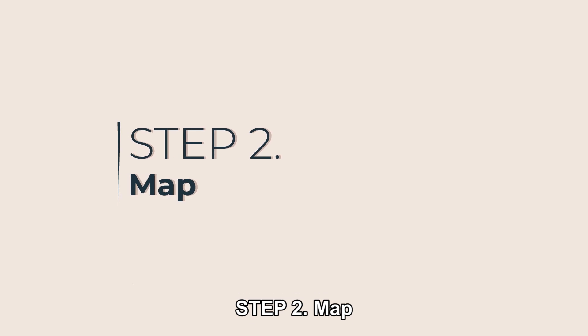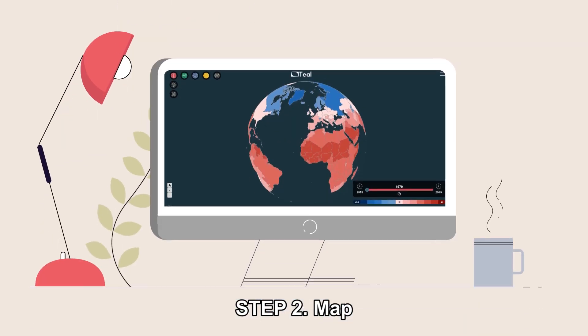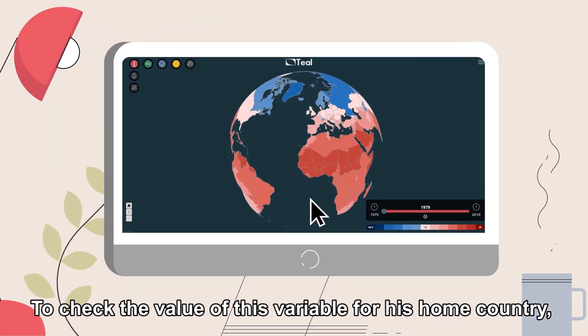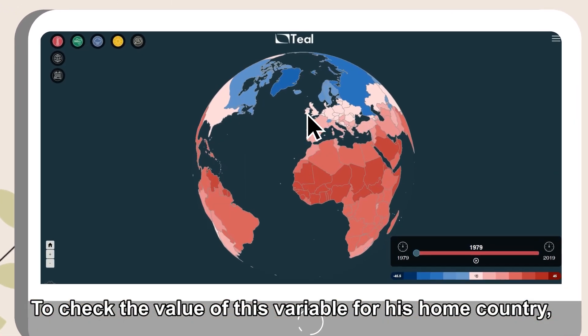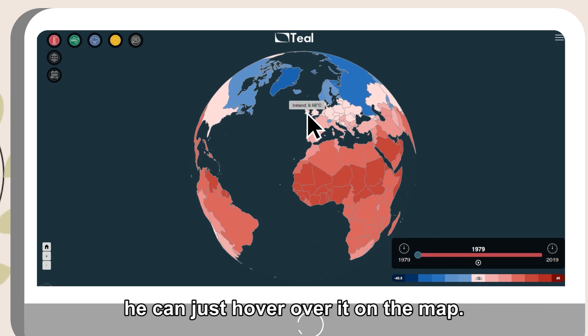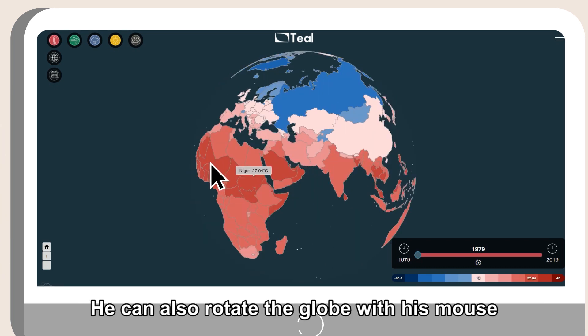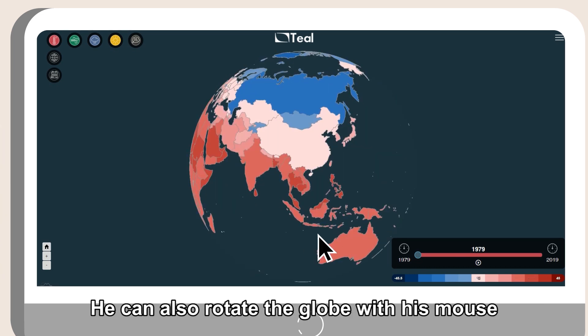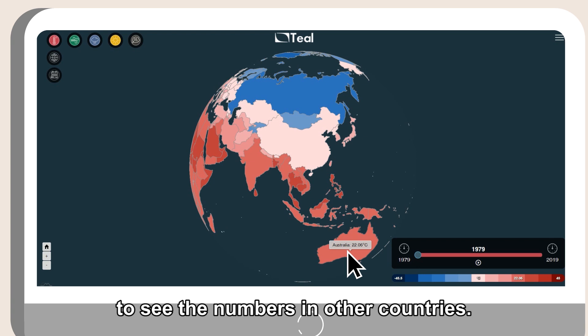Step two: map. To check the value of this variable for his home country, he can just hover over it on the map. He can also rotate the globe with his mouse to see the numbers in other countries.